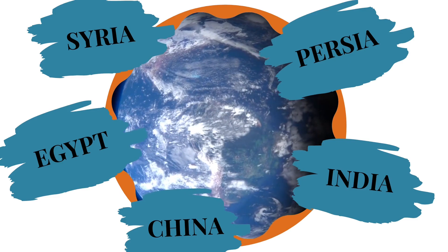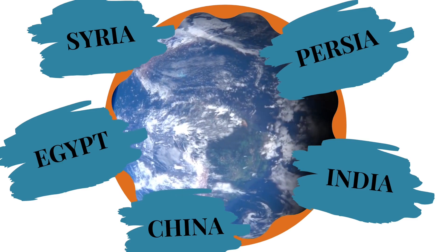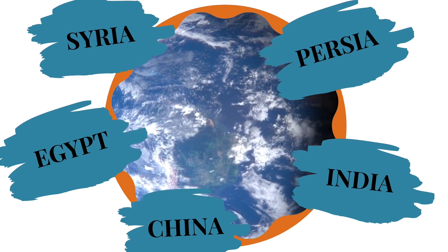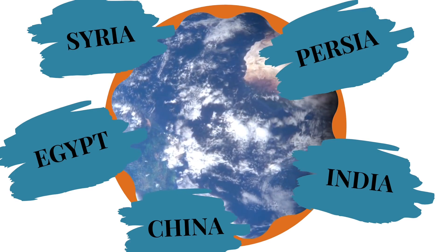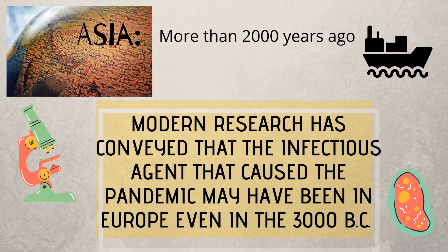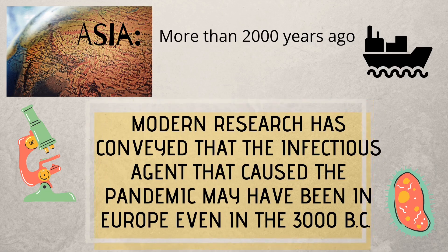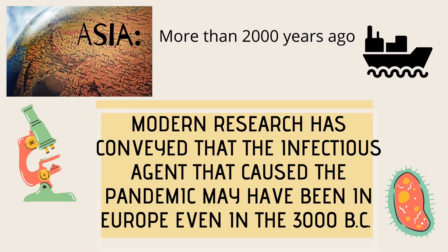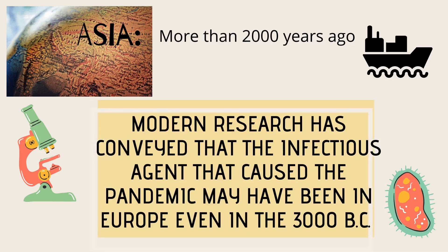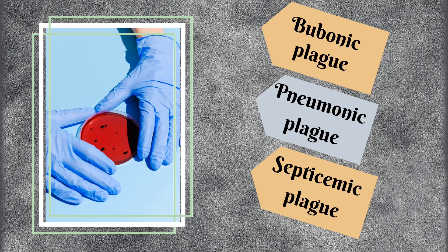The disease was indeed present in Egypt, India, Syria, Persia, and China in the early 1340s. Although the disease is considered to have arrived in Asia more than 2,000 years ago and is expected to have dispersed by trading ships, modern research has conveyed that the infectious agent that caused the pandemic may have been in Europe even as far back as 3,000 BC.